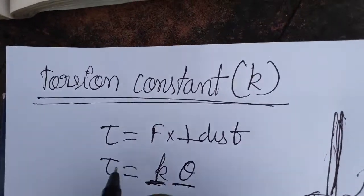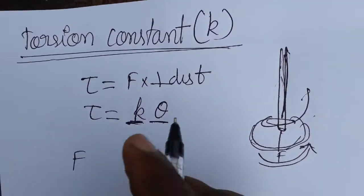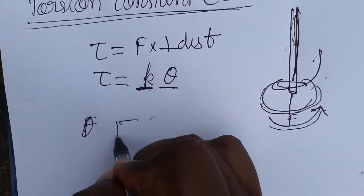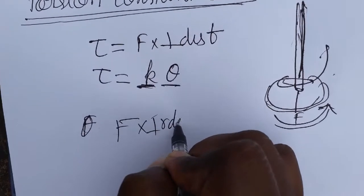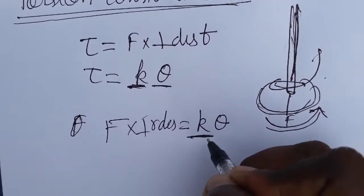Both the torque represent the same thing. When we are twisting, the spring is going to twist opposite side. So force into perpendicular distance equals K times theta. Now we are finding K SI unit.